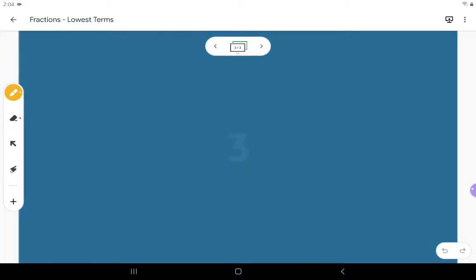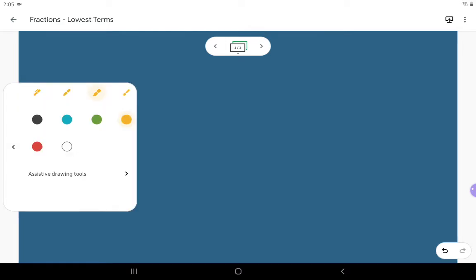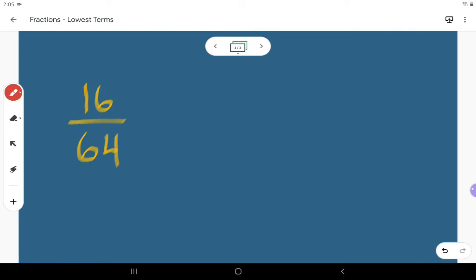Now you might get some that are a little bit more difficult than others. So I might get something like 16 over 64. These guys have a fairly large common factor, but if you can't see the largest common factor right away, that's fine. We can pull out common factors one by one.